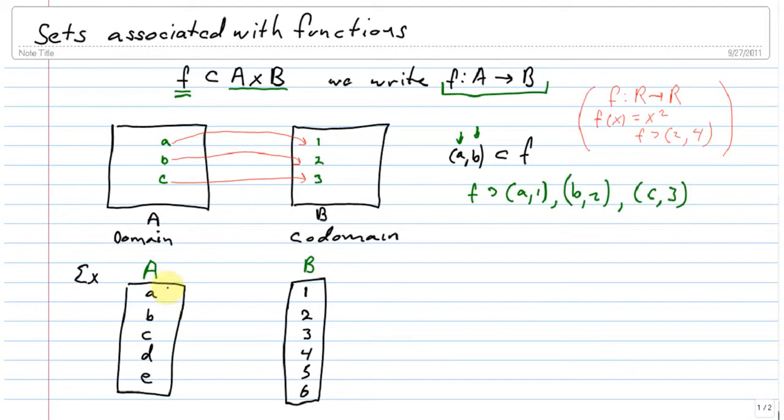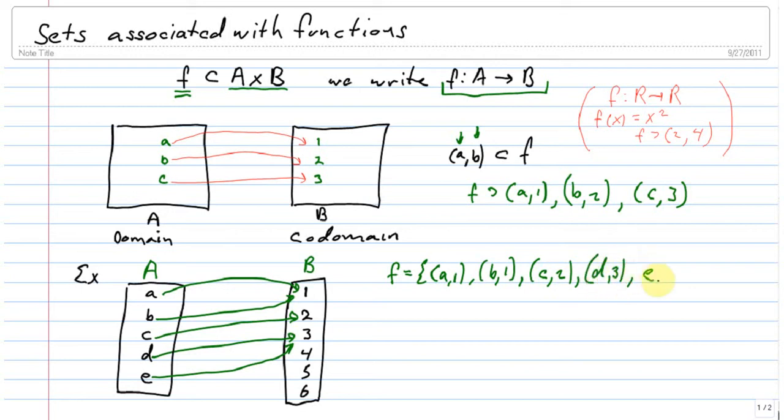And I'm going to define my function just by drawing arrows. So A can go to 1, say B goes to 1, C goes to 2, D goes to 3, E goes to 3. So our function f is the set {(a,1), (b,1), (c,2), (d,3), (e,3)}.